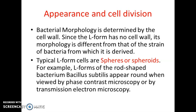Next is the appearance and cell division of L forms. The morphology of bacteria is determined by the cell wall. Since L forms have no cell wall, their morphology is different from that of the strains of bacteria from which they are derived. The morphology of L forms is quite different from the parent strains.